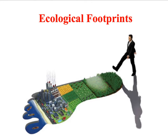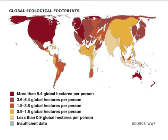A widely used indicator of sustainable development is the concept of an ecological footprint. The ecological footprint of an individual person is a measure of the amount of land required to provide for all of their resource requirements, plus the amount of vegetated land required to absorb all of their CO2 emissions, including the CO2 embodied in the products they consume. Ecological footprints are expressed in units called global hectares, and currently about 2.1 global hectares is considered to be a fair share of the world's resources.